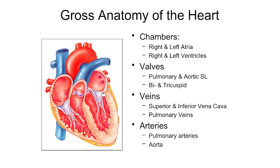We have a bicuspid valve on the left side that sits between the left atrium and the left ventricle. Again, this ensures that blood moves from the atria to the ventricles. When the ventricle contracts with a lot of force, the blood sloshes back against that valve and closes it, so we don't have blood moving back into the atria. We want a one-way flow of blood through the heart.